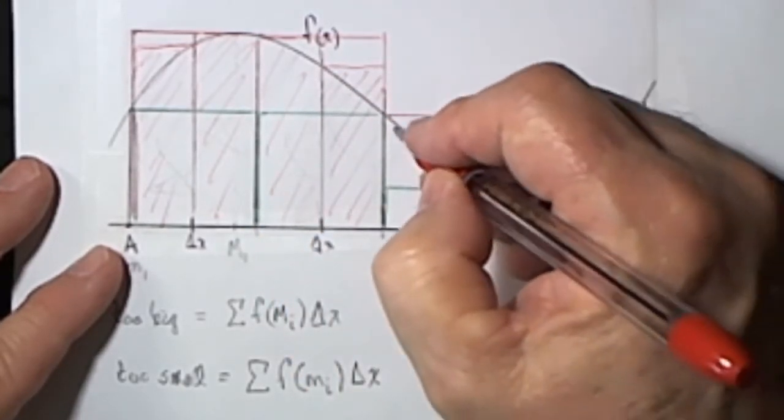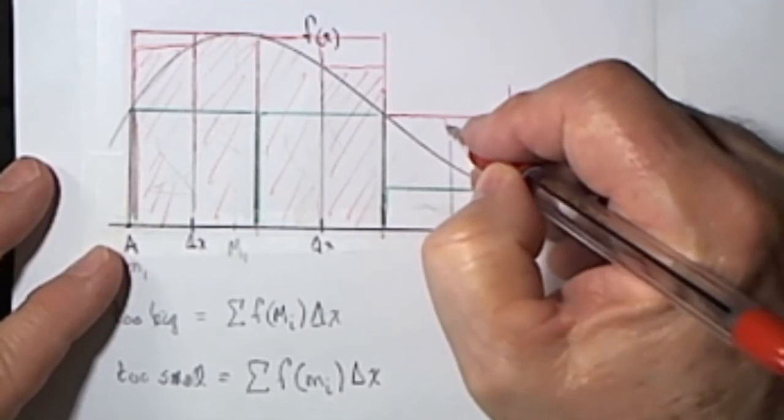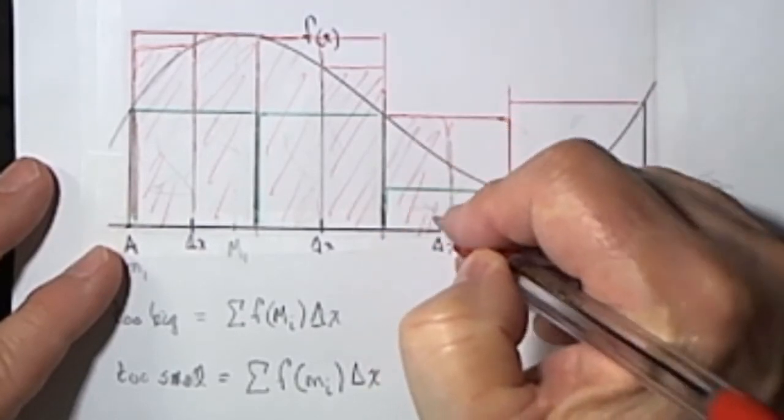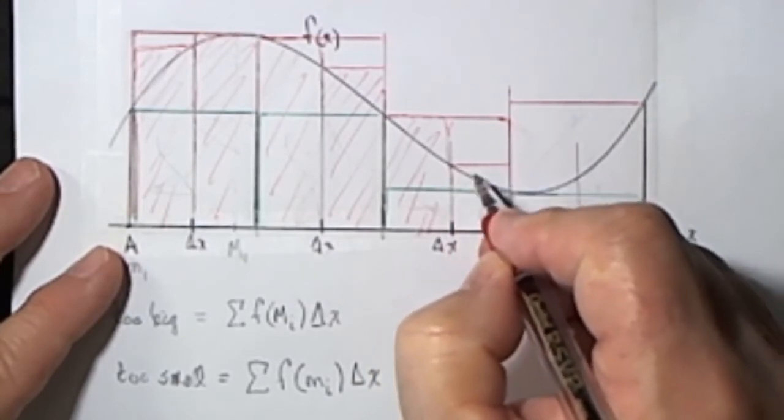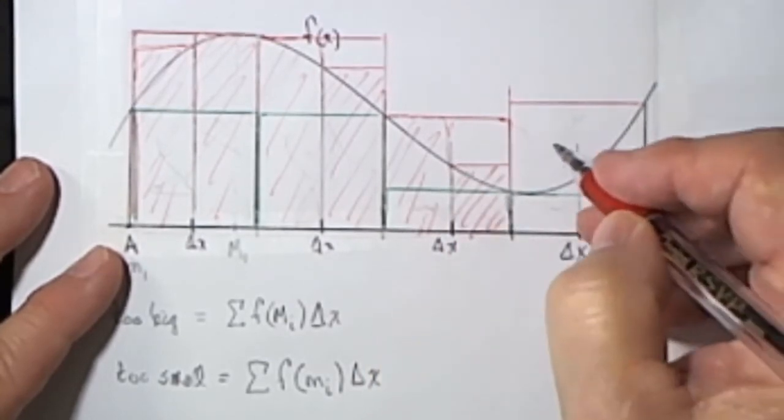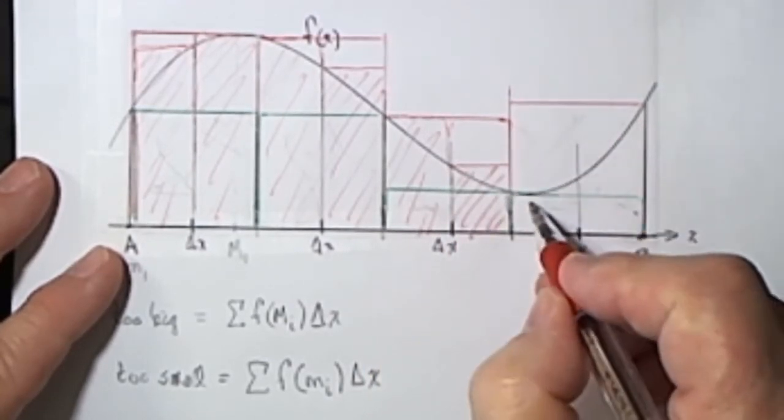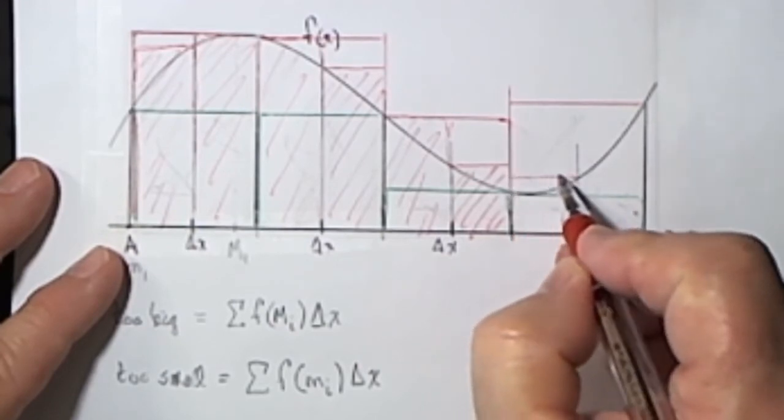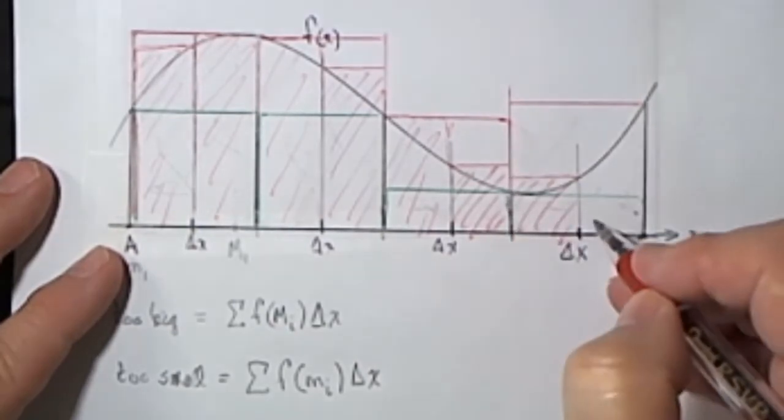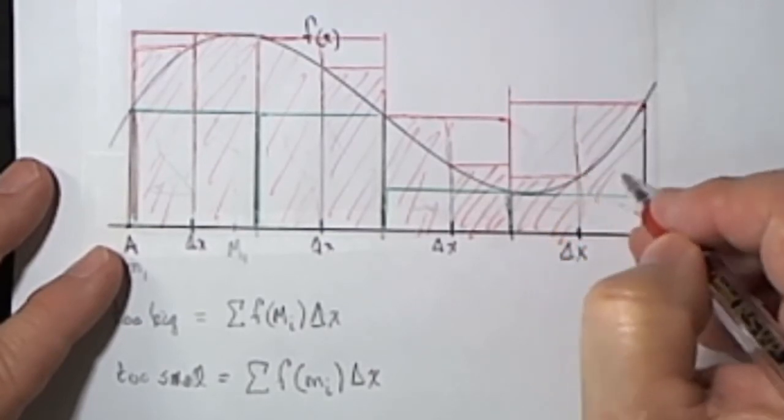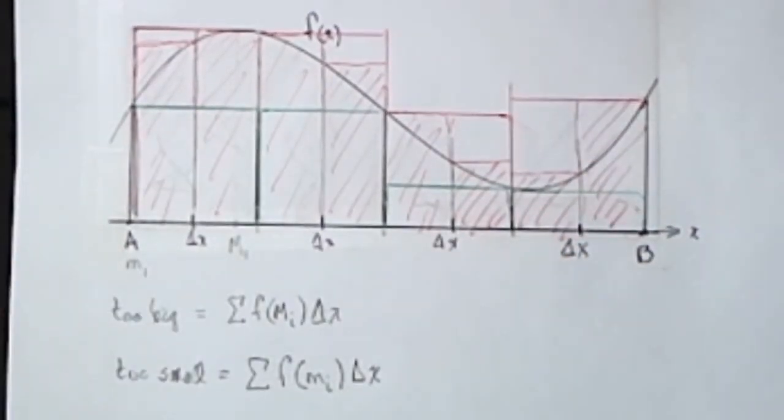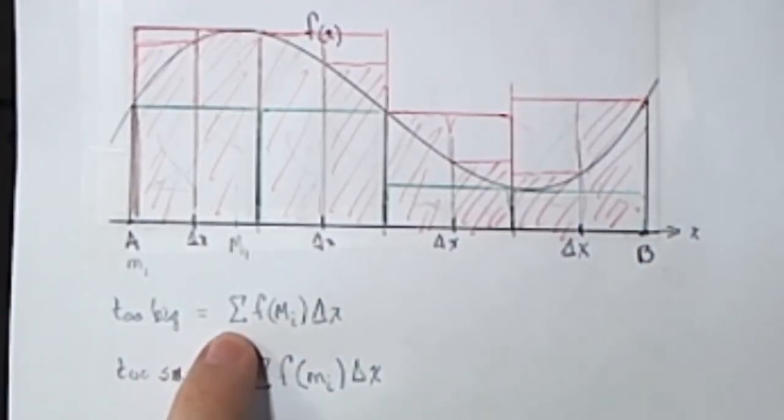And this one, the maximum would be right there. And the maximum here would be here, getting quite a bit smaller than what it was before. Now the maximum here is right there, and the maximum on this one is right there. So now the sum of those new red rectangles is less than the too-big estimate that we had before.